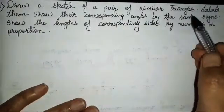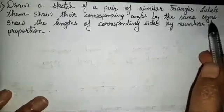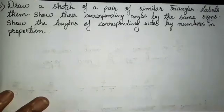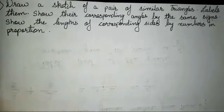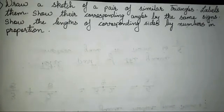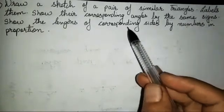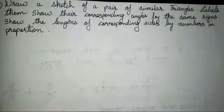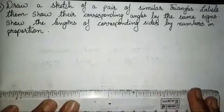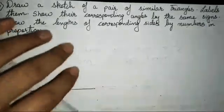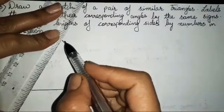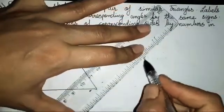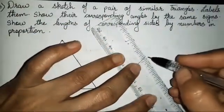Draw a sketch of a pair of similar triangles, label them, show their corresponding angles by the same signs, and show the length of corresponding sides by numbers in proportion. Sketch means we don't have to take actual measurements — you all have to just draw equivalent to that measurement. We will draw two triangles: a larger one and a smaller one which will be in proportion to the first one. We will name them ABC and PQR.